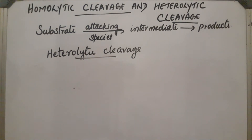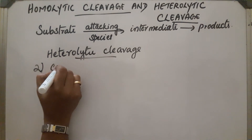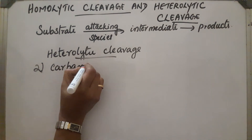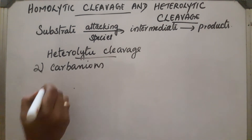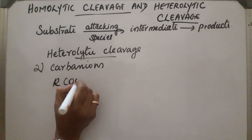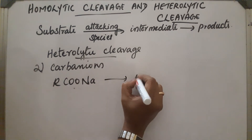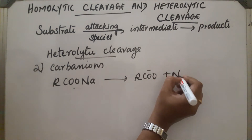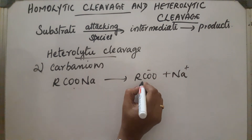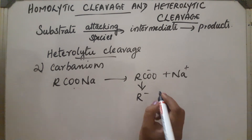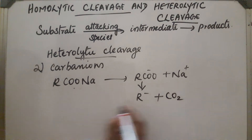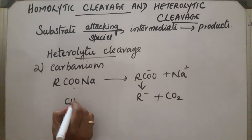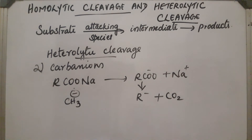The second intermediate obtained in heterolytic cleavage is a carbanion, which carries a negative charge. For example, RCOONa gets converted into RCOO− and Na+. RCOO− further breaks down into R− (carbanion) and CO2. If R is CH3, then the carbanion formed is CH3−.